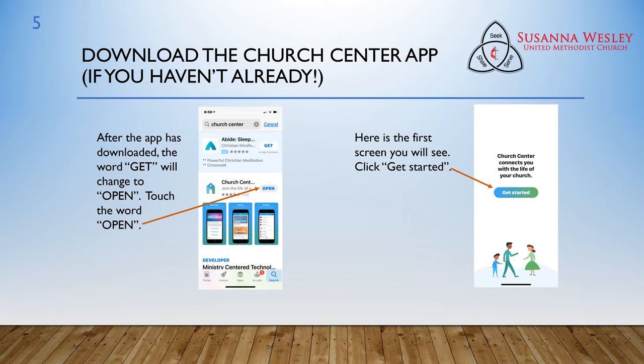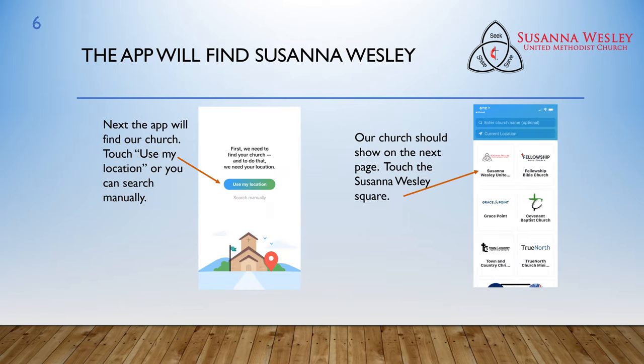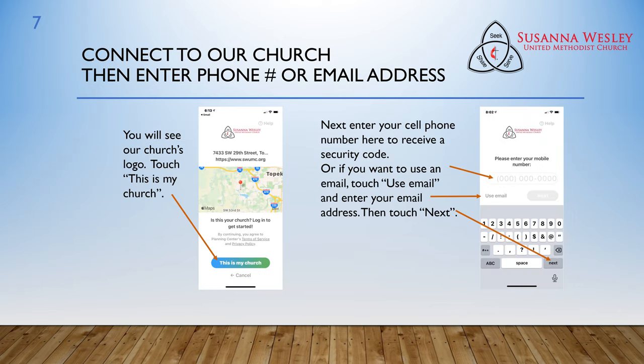Here's the first screen you'll see. Click Get Started. Next, the app will find our church. Touch Use My Location, or you can search manually. It's probably a little easier to use the Use My Location button. Our church should show on the next page — touch the Susanna Wesley square.